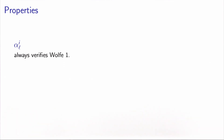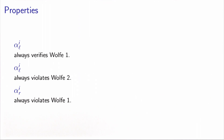Let's see some properties of these parameters. First, the lower bound αL always verifies Wolfe condition 1 — it is updated only when Wolf1 is verified and Wolf2 is violated. For the same reason, it always violates Wolf2. Finally, αR always violates Wolf1: it is initialized at plus infinity and is updated each time Wolf1 is violated. So αL verifies Wolf1 and violates Wolf2, and αR violates Wolf1.